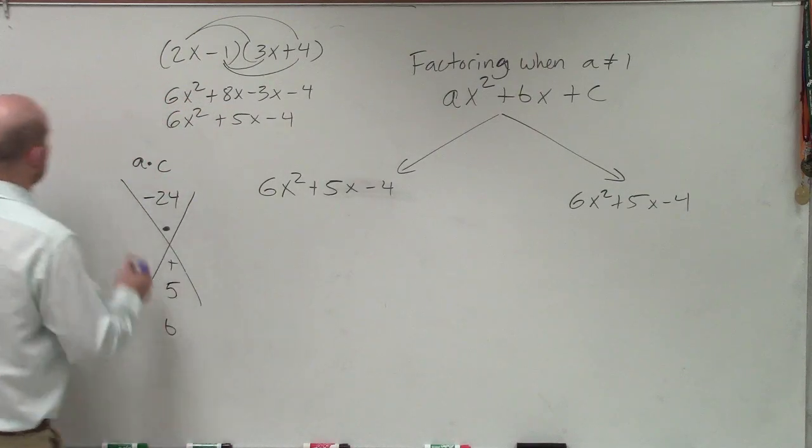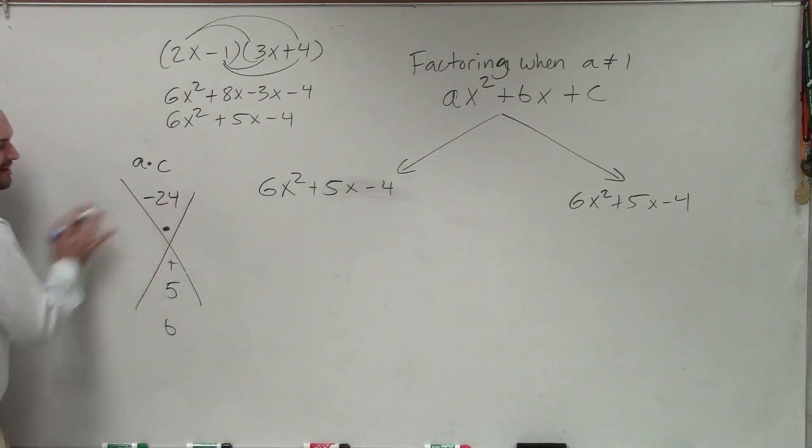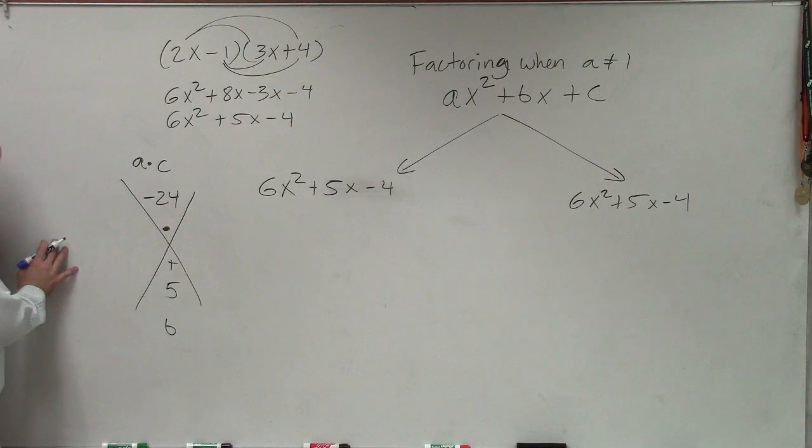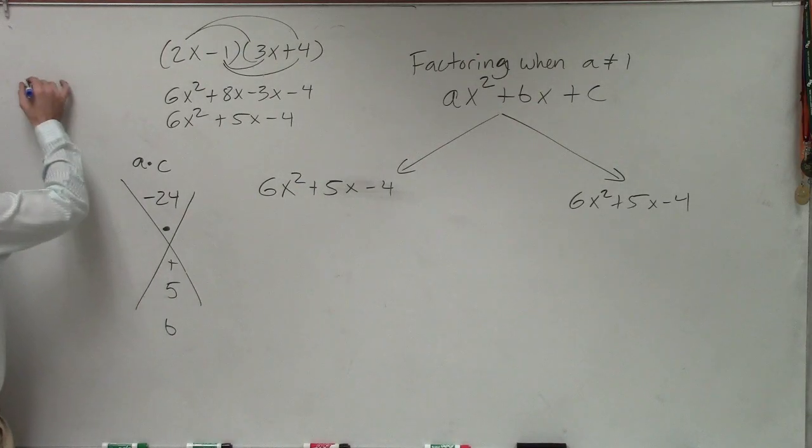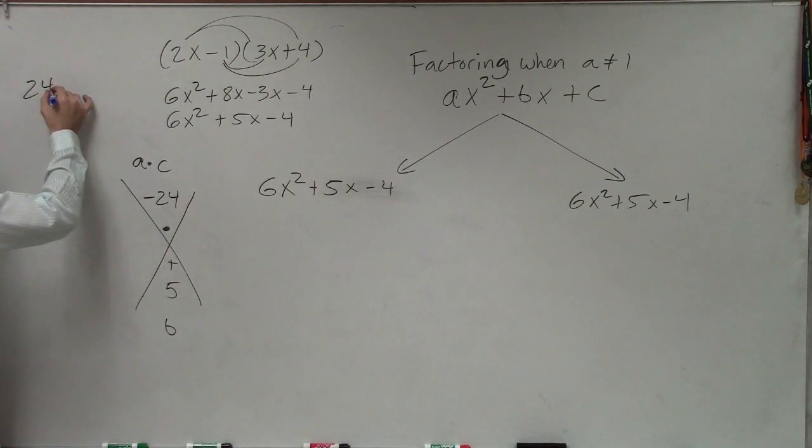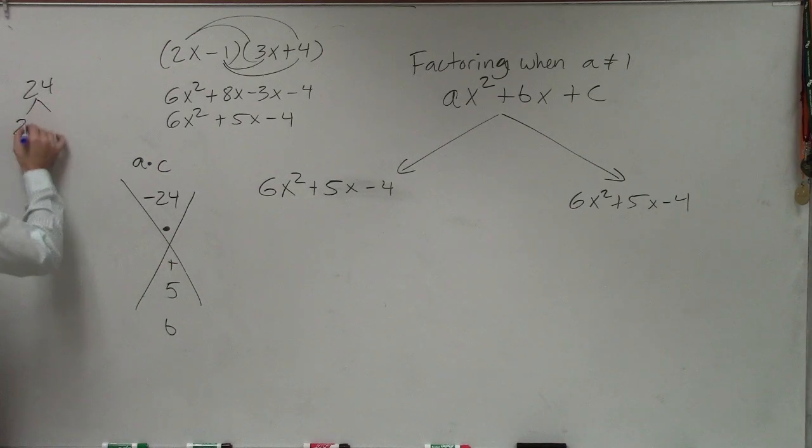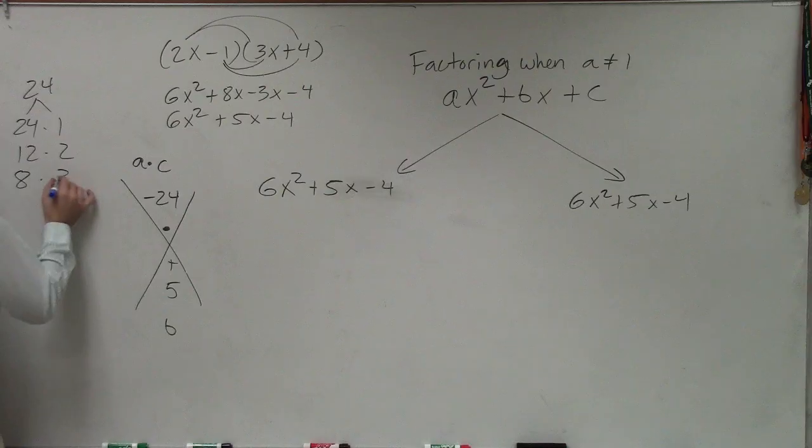So to do that, a lot of times I'm just going to write the factors. I'm not going to worry about the negative here in a second. I'm just going to write the factors for 24. So I could do 24 times 1, 12 times 2, 8 times 3, and 6 times 4. And that's going to be it.